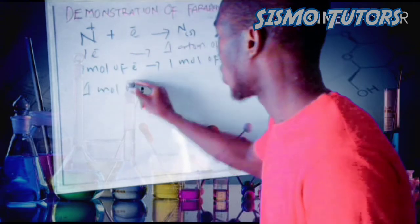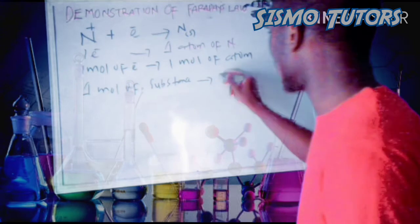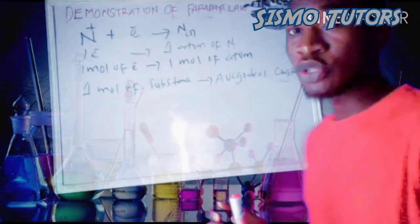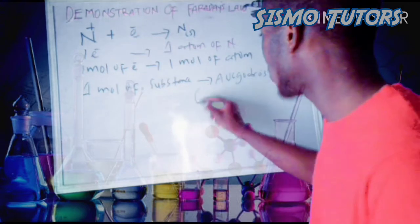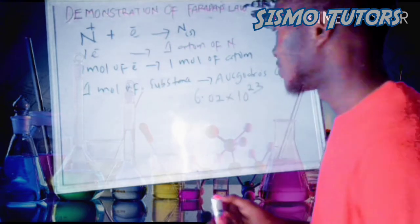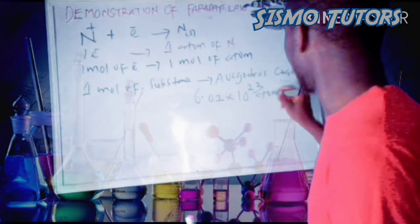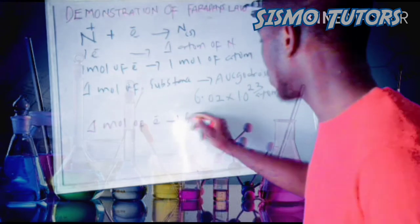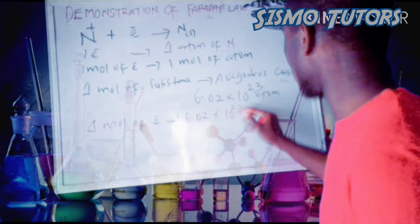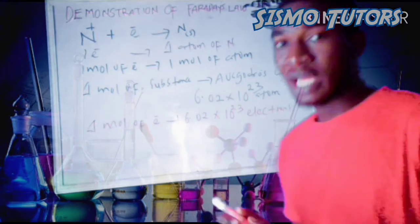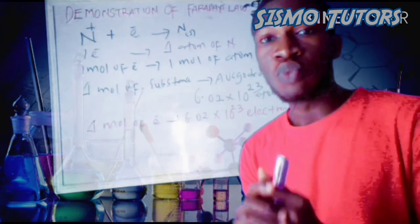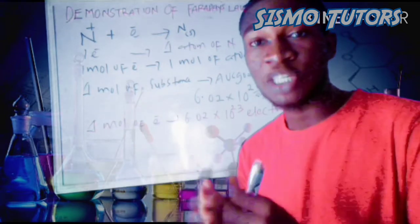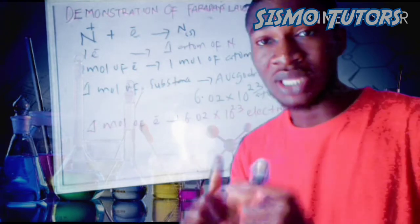We know that one mole of any substance will give us Avogadro's constant, which is 6.02 times 10 raised to the power of 23 of anything, such as atoms. So it implies that one mole of electrons will give us 6.02 times 10 raised to the power of 23 electrons. Since one mole of a substance gives us 6.02 times 10 raised to the power of 23 of that substance, if you have one mole of electrons, it will give us 6.02 times 10 raised to the power of 23 electrons.